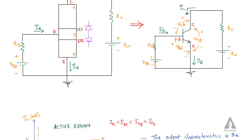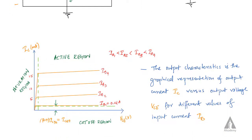The output characteristics plots the output current IC on the y-axis and the output voltage VCE on the x-axis, for different values of IB, that is the input current.